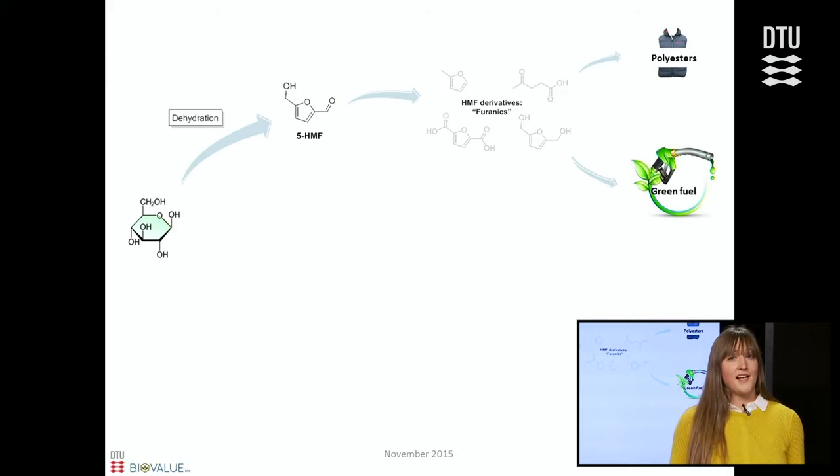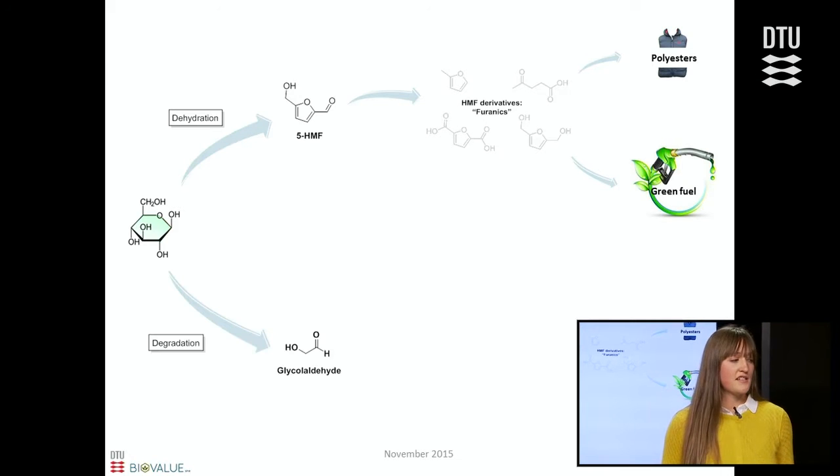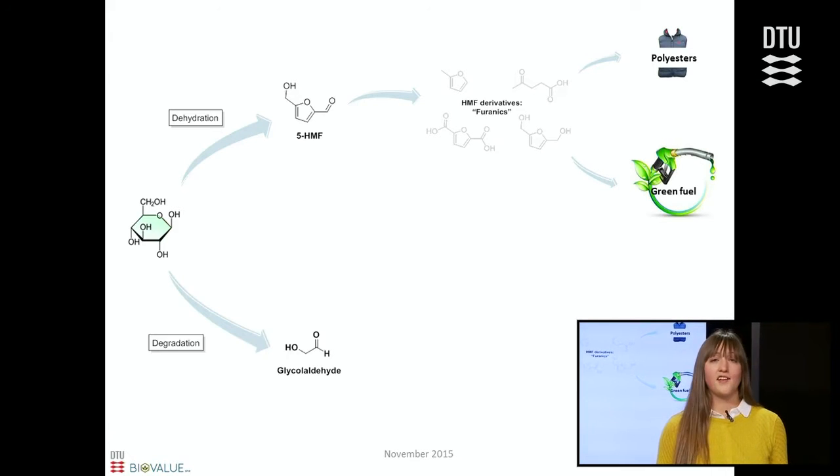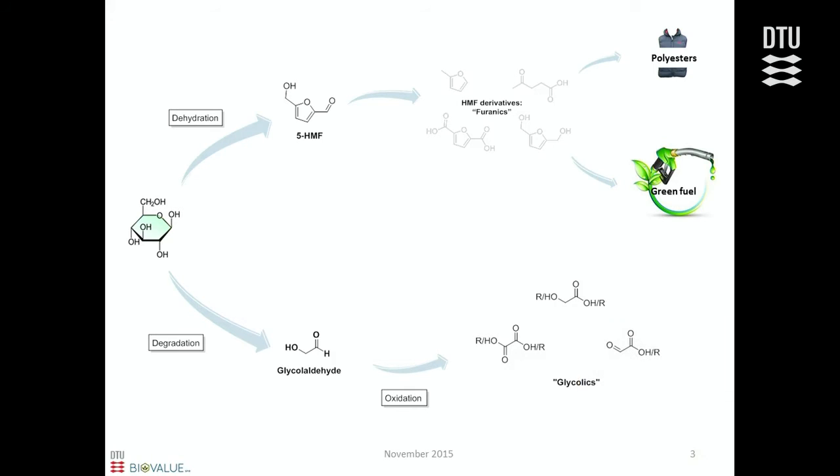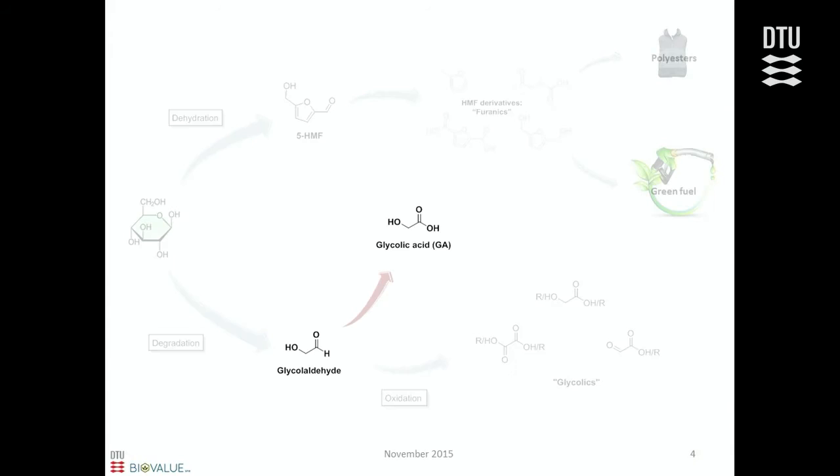You can obtain glycol aldehyde by the degradation of glucose. Glycol aldehyde consists, just like HMF, of an aldehyde and an alcohol moiety. So my project is to convert glycol aldehyde into different glycolic compounds by oxidation. The first focus is on the oxidation of glycol aldehyde into glycolic acid.